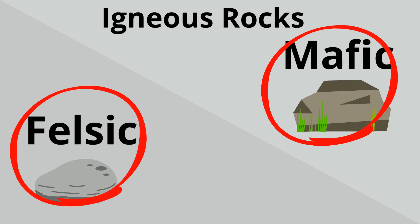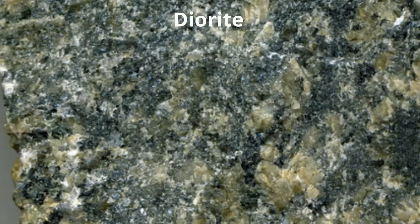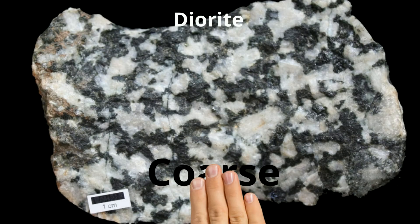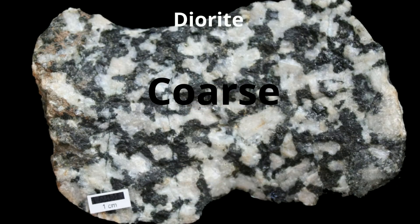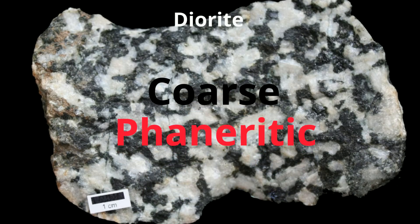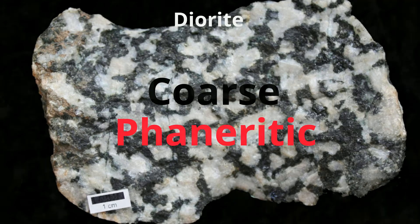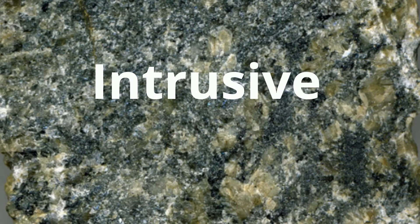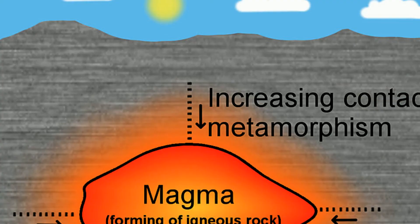Diorite has larger crystals than one millimeter, so it makes it coarse and more specifically phaneritic. The larger crystals tell you that it is an intrusive rock created from magma found in the earth.